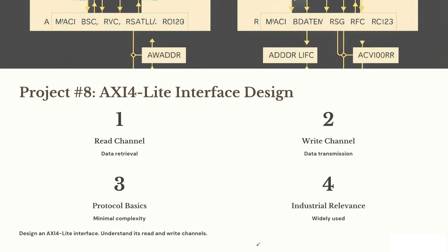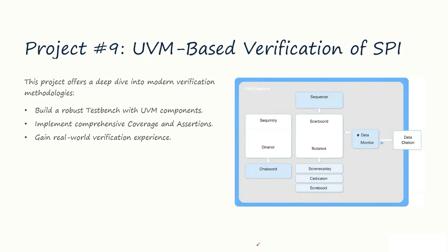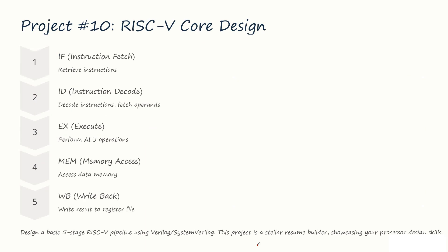Project 9 is UVM-based verification of SPI. Once you've completed your UVM learning, start implementing the SPI protocol. You will create a full testbench, implement coverage and assertions — basically become Sherlock Holmes for bugs. If you are aiming for a job in verification, this is your ticket.